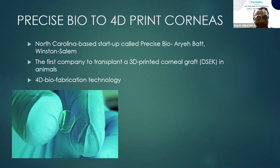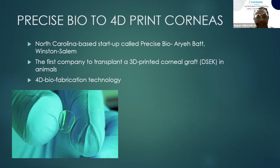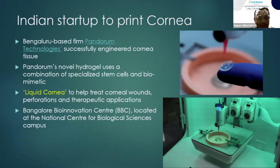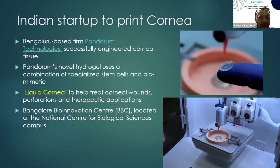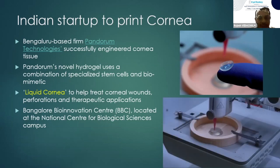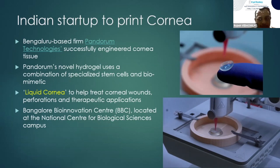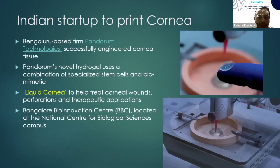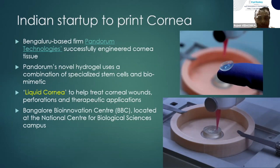What is 4D printing? After printing the corneal cells, they are kept in a controlled environment for the cells to differentiate into a tissue — this is called 4D printing. Even in India, a Bangalore-based company called Pandorum Technologies has come up with a bioprinted cornea they call the liquid cornea, mainly used for therapeutic applications and corneal tears.